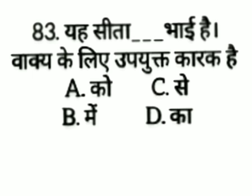The next question: Yahaan Sita dash baayi hai — vaakki ke liye upayukt karak hai — option A: ko, option B: mein, option C: say, option D: ka. The answer is option D, ka. Yahaan Sita ka baayi hai.